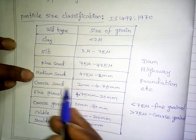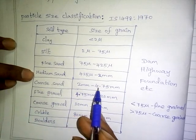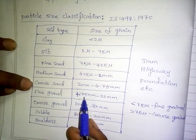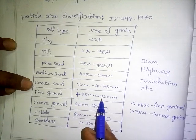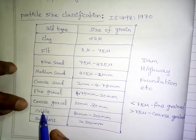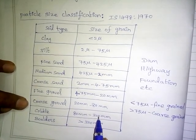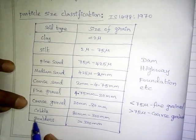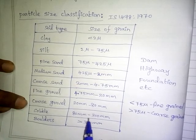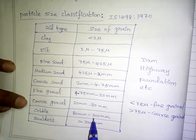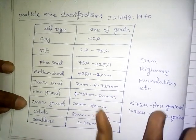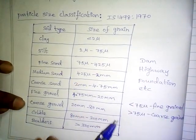Continuing the size classification: coarse sand is 2 to 4.75 mm, fine gravel is 4.75 mm to 20 mm, coarse gravel is 20 mm to 80 mm, gravel up to 300 mm, and boulder is greater than 300 mm — that is, greater than 30 cm in size.